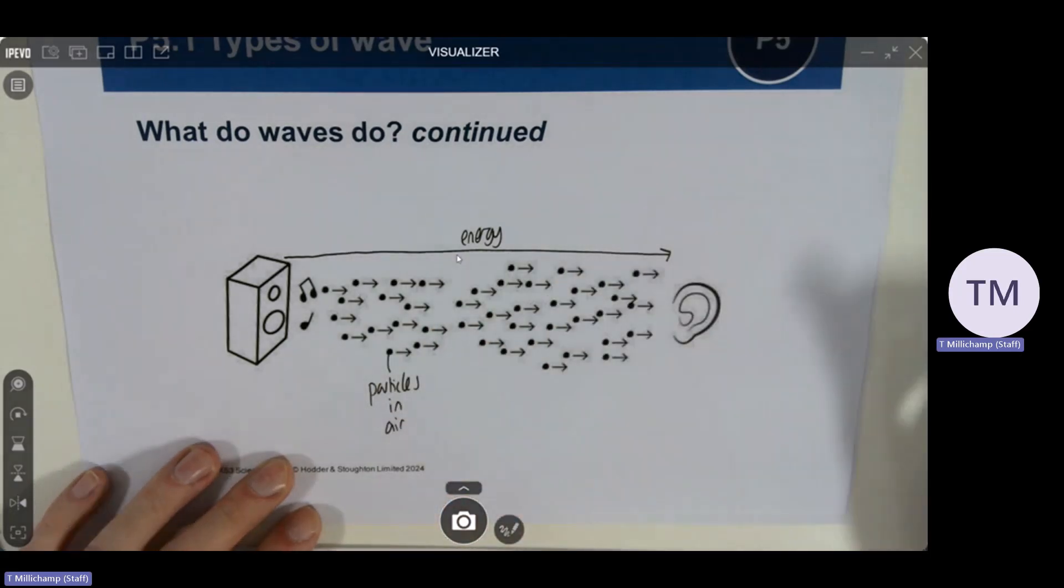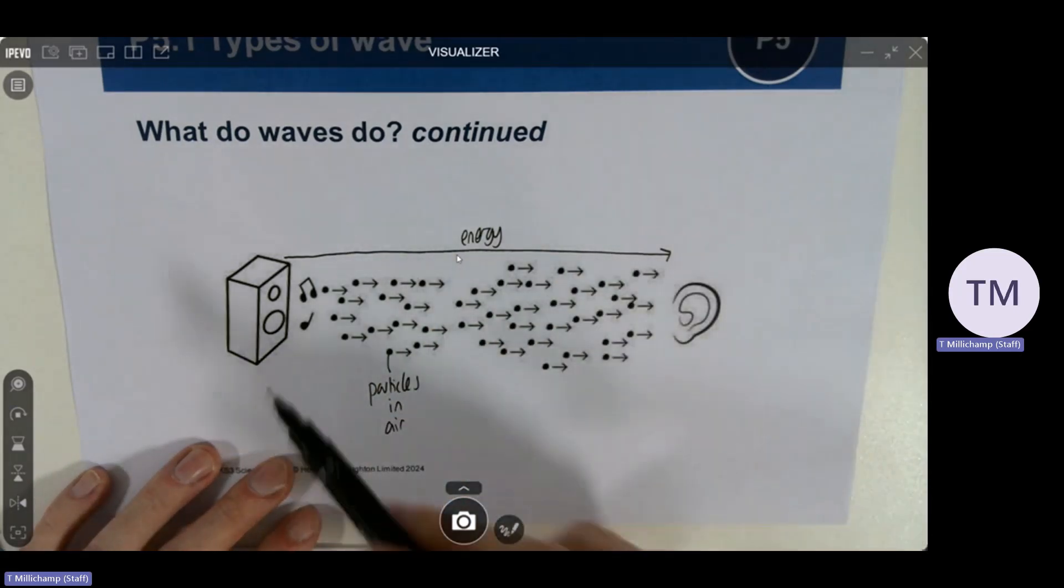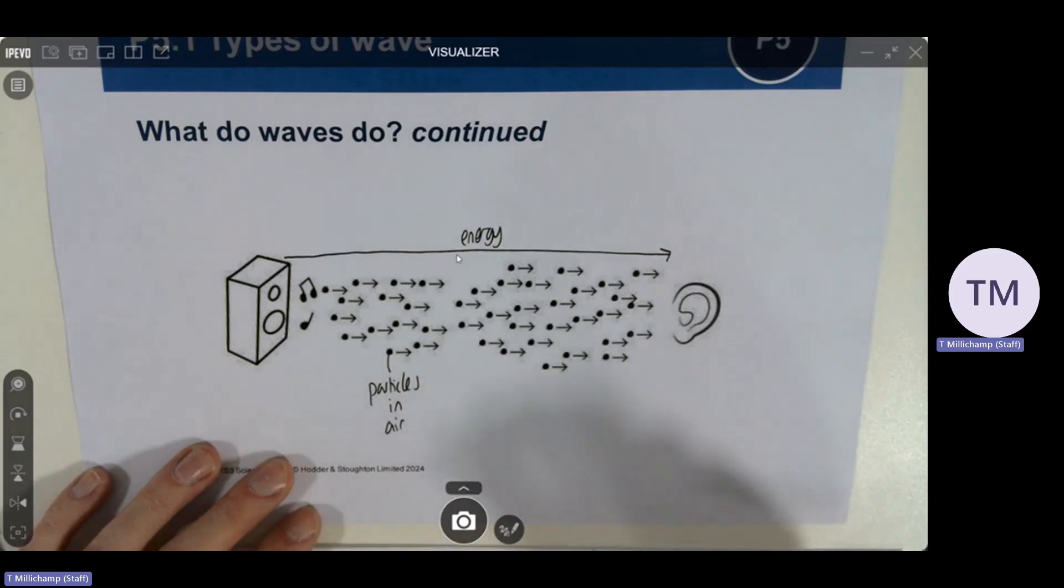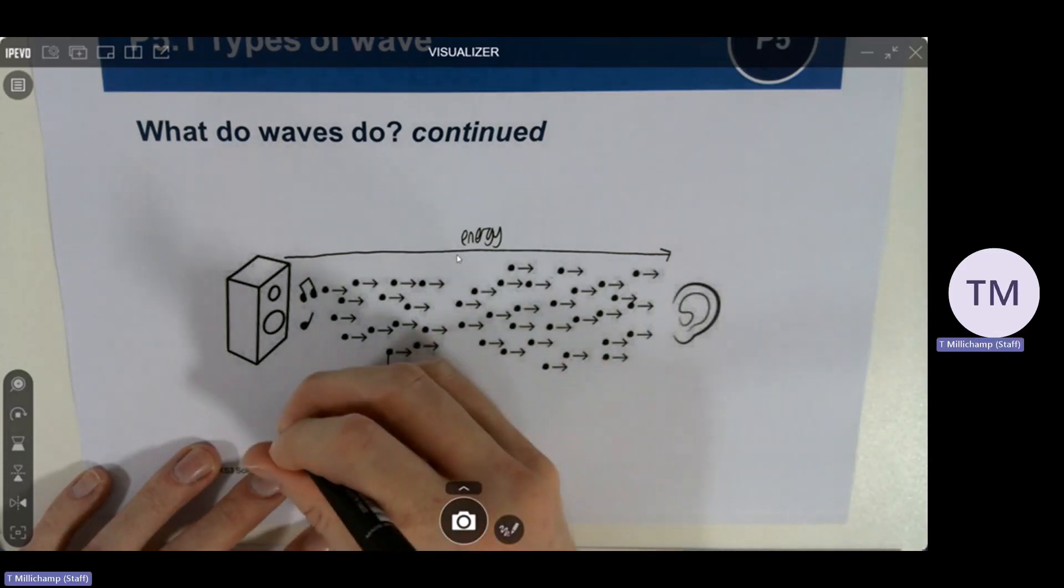So all of these little dots are meant to represent particles and we could imagine that these particles pick up the energy from the speaker and take it to our ear. This is not correct.